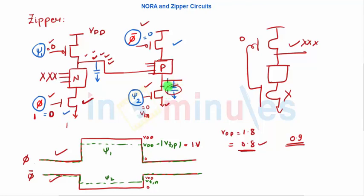So in simple words, NORA circuit avoids the race condition in dynamic circuits. However, it has a problem of charge leakage. So we use zipper circuits where the circuit is exactly same like NORA.